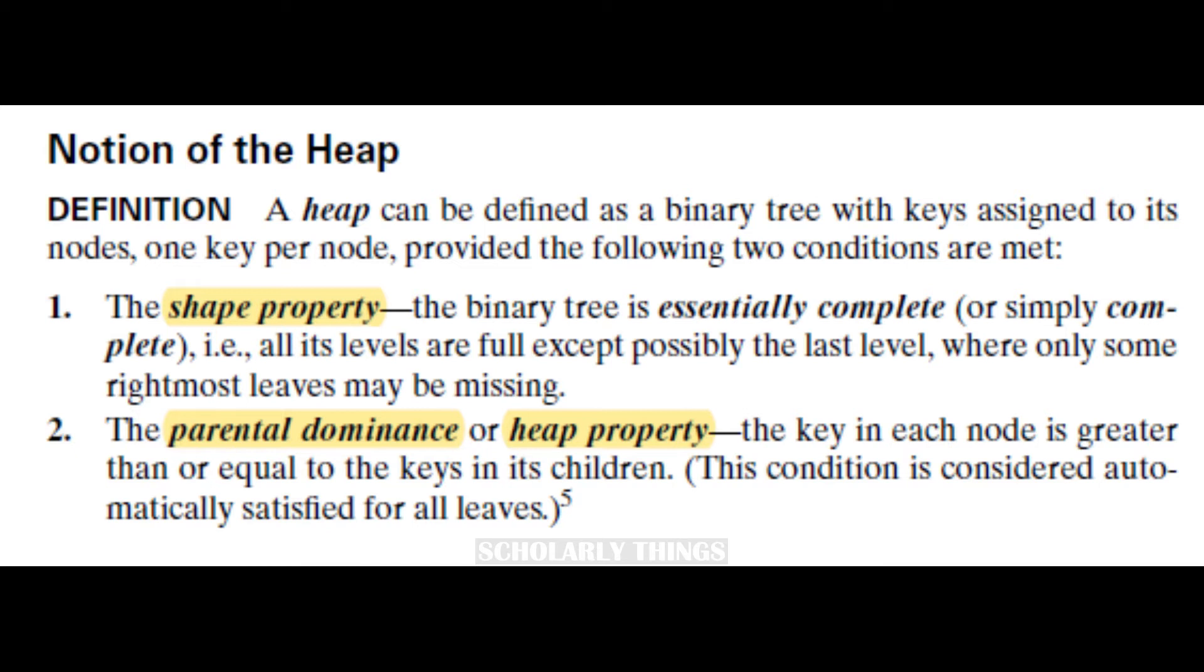The first one is the shape property, which says that the binary tree should be complete—that is, all its levels should be complete. The only exception is the last level where some of the rightmost leaves can be missing. The second property is parental dominance or heap property. It says that the key in each node is greater than or equal to its children.